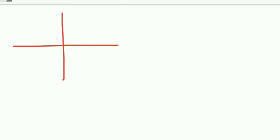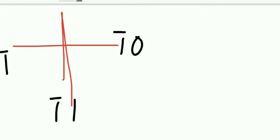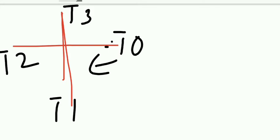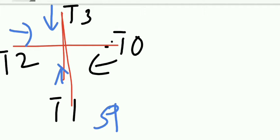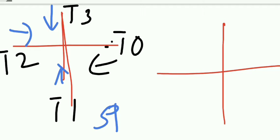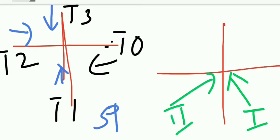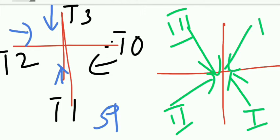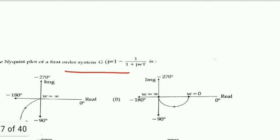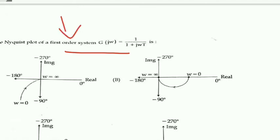For the Nyquist plot starting point: type 0 starts here, type 1 starts here, type 2 starts here, type 3 starts here. For the end point: a first-order system ends here, a second-order system ends here, a third-order system ends here. Remember both the starting and ending points for each type and order.